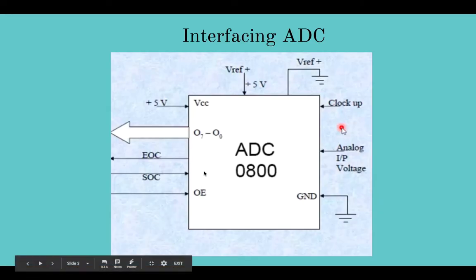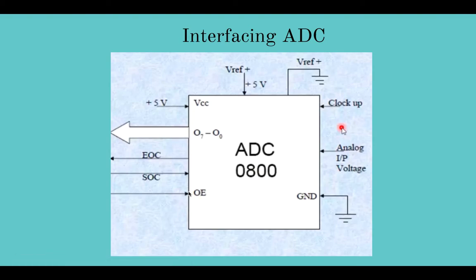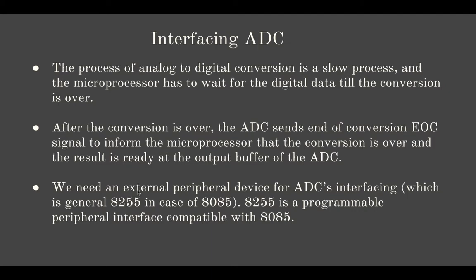After that we will get an OE, which after that we can send the output data to the microprocessor. We need an external peripheral device generally for ADC's interfacing. For the experiment we used the 8255 peripheral device. It's a programmable peripheral interface compatible with 8085, and is basically used to establish communication between our microprocessor and our ADC.